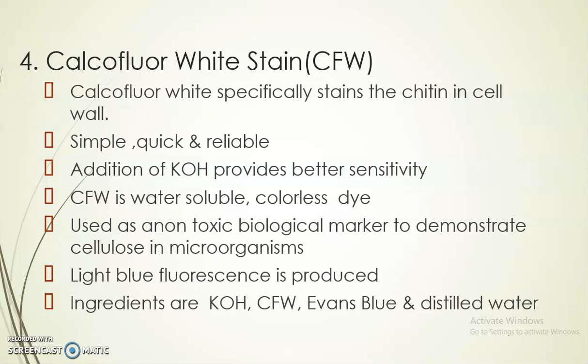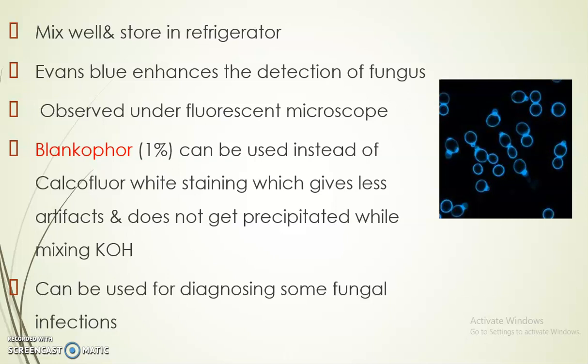The fourth stain is calcofluor white staining. Calcofluor white stain is specifically used to stain the fungal cell wall components, mainly chitin. It is a simple and reliable method; KOH can be added to provide better sensitivity. The dye is available as a colorless dye and can be used as a non-toxic biological marker to demonstrate cellulose in microorganisms. Light blue fluorescence is produced. Ingredients are KOH, calcofluor white dye, Evans blue, and distilled water. Mix all ingredients and store in the refrigerator. Evans blue enhances the detection of fungus, and it is observed under a fluorescent microscope. Blankophor 4 (1%) can be used instead of calcofluor white stain, giving less artifacts and not precipitating when mixed with KOH.